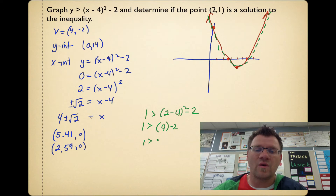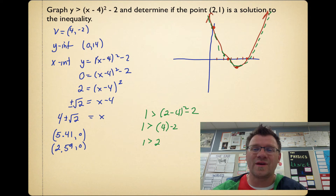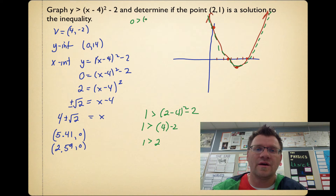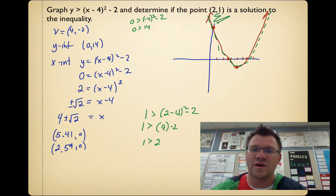Is 1 greater than 2? No — so (2, 1) is not a solution to this inequality. Since the sketch makes it hard to locate (2, 1) precisely, we also test the point (0, 0): is 0 > (−4)² − 2? That gives 0 > 14, which is false. So we are not shading towards (0, 0) — we shade everything outside the parabola instead, meaning the region outside the parabola satisfies y > (x − 4)² − 2.